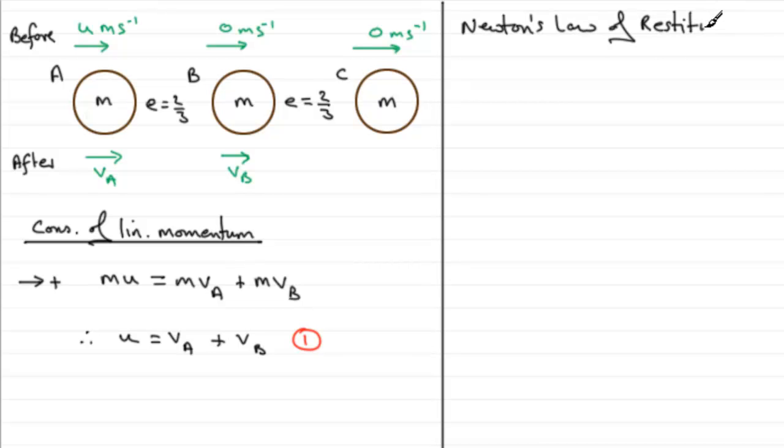This is the first equation for our simultaneous equations, and we need to get another one by considering Newton's law of restitution. Basically, what we've got is that the coefficient of restitution e is equal to the relative speed of separation divided by the relative speed of approach. The relative speed of separation is vb minus va, and because B is stationary, the relative speed of approach is just going to be u.